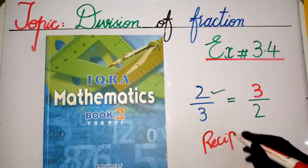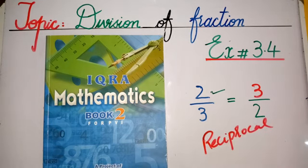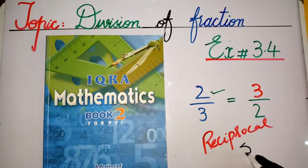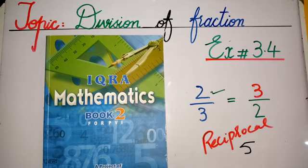We have our numerator, for example 5, and I will tell you that this is reciprocal. So how do we take the reciprocal?